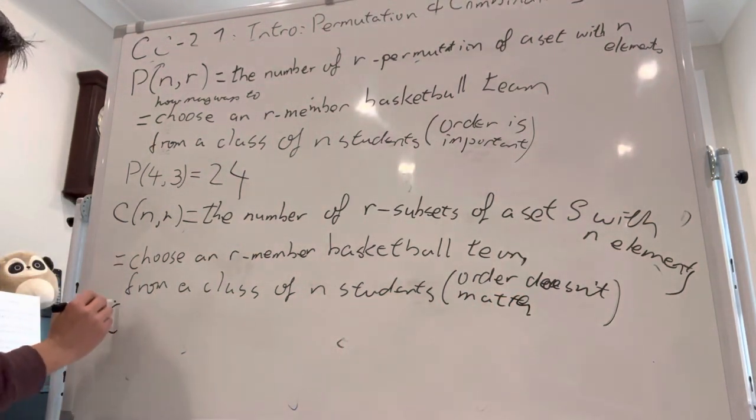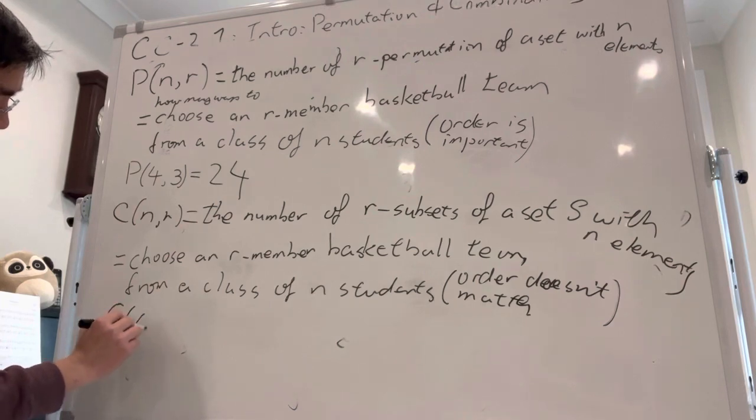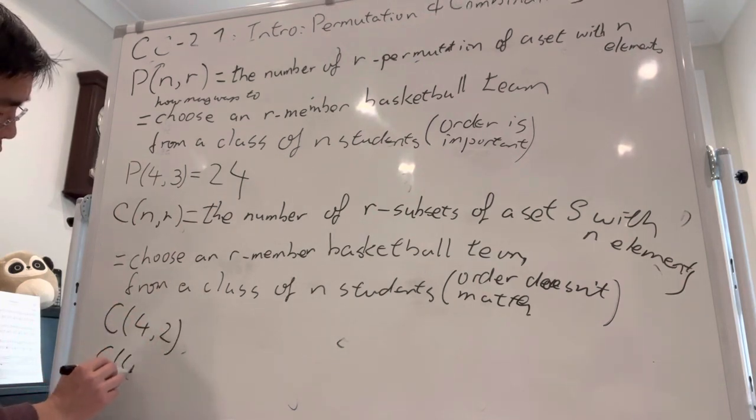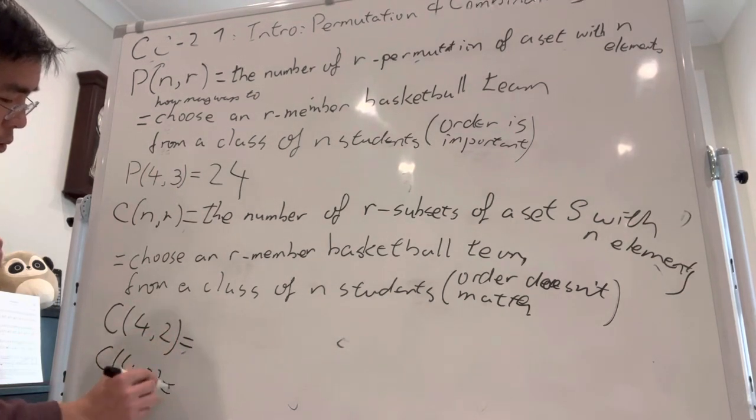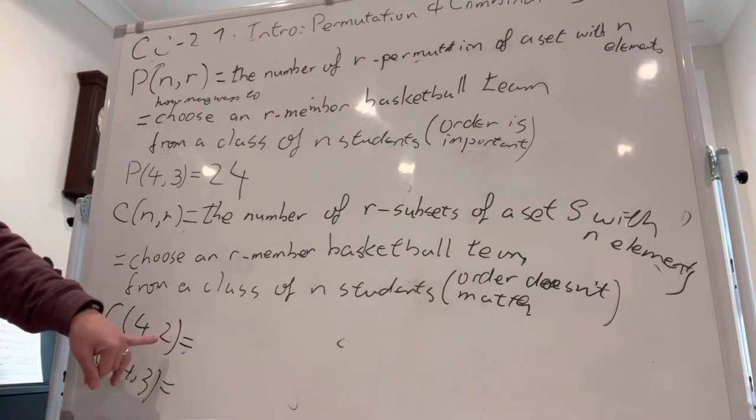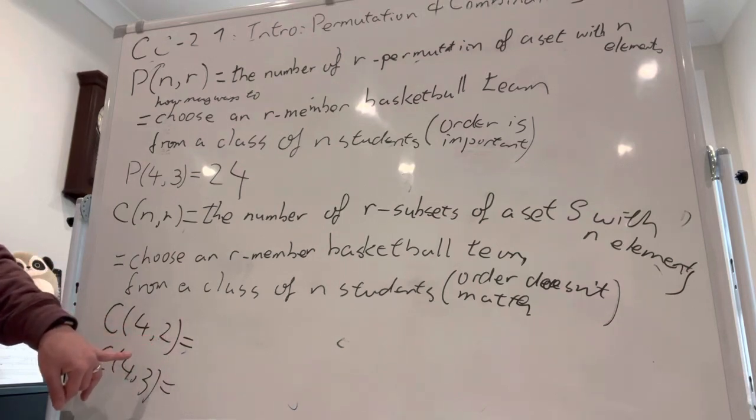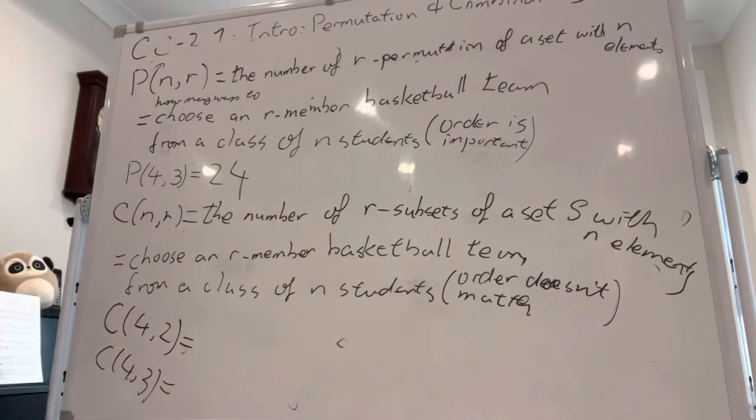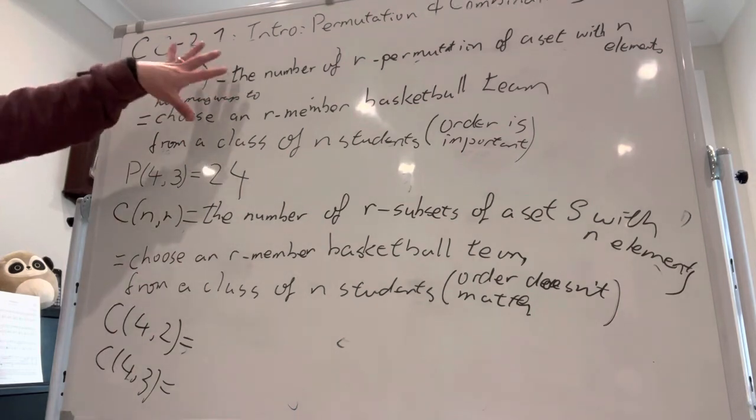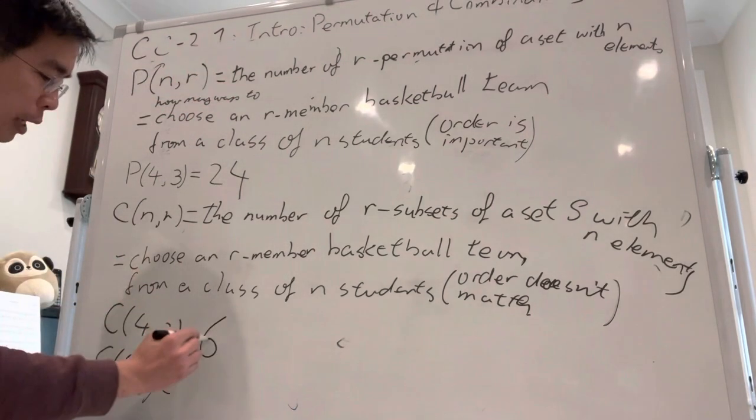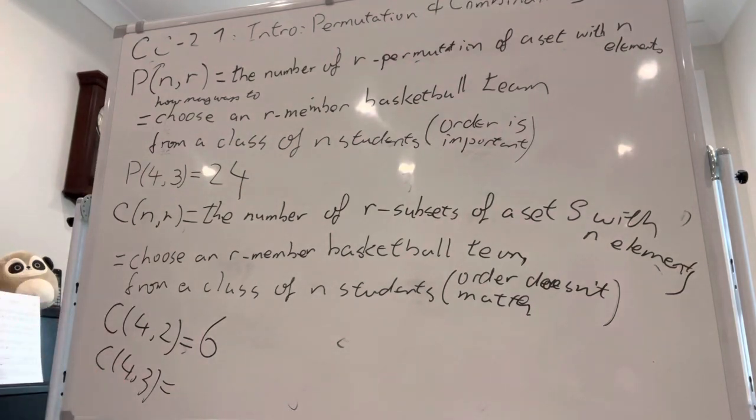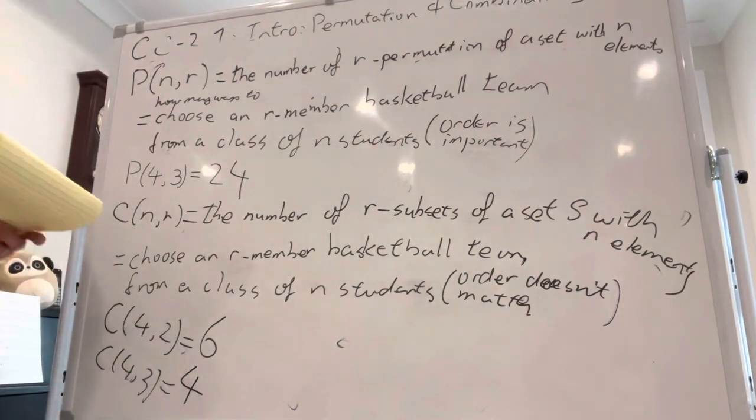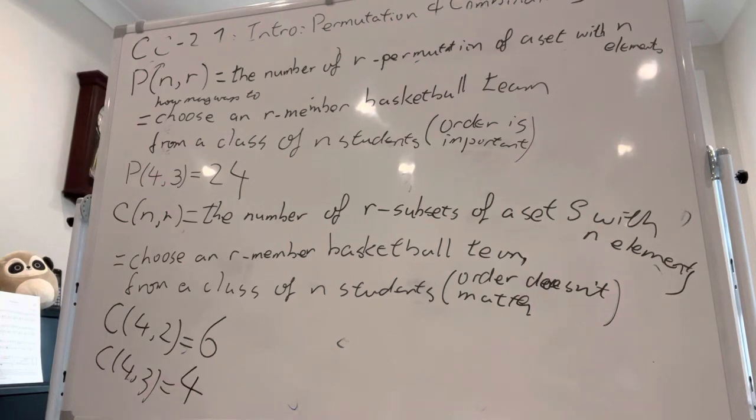So therefore from our previous, what is C(4,2)? What is C(4,3)? So how many ways can we choose a two-member basketball team out of four students? Six. It was on the top left of the previous one. What about three-member team? Four. Yep. So before we break, can I get a show of hands so far? Okay, cool.